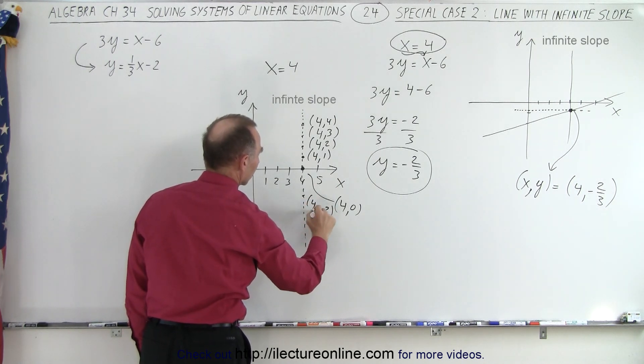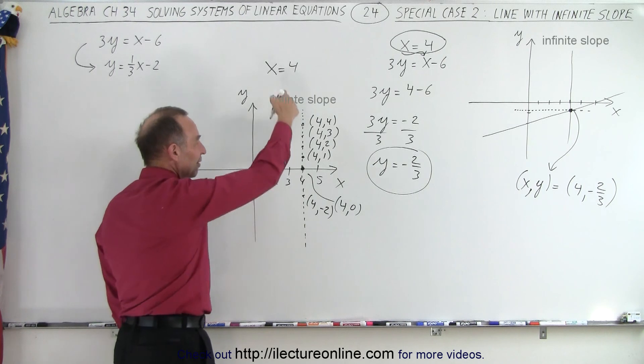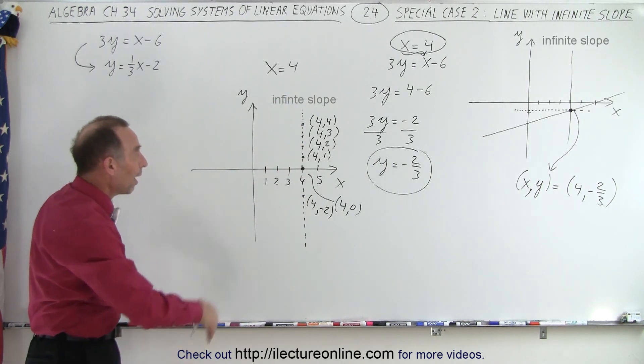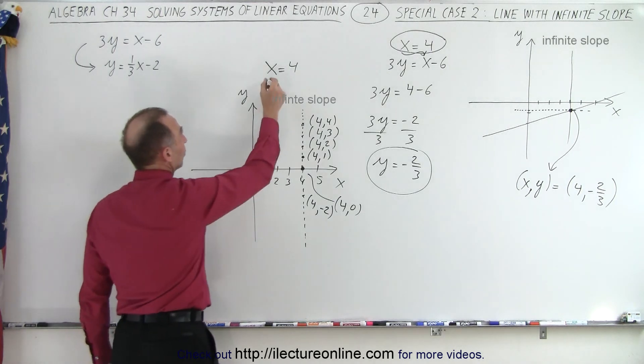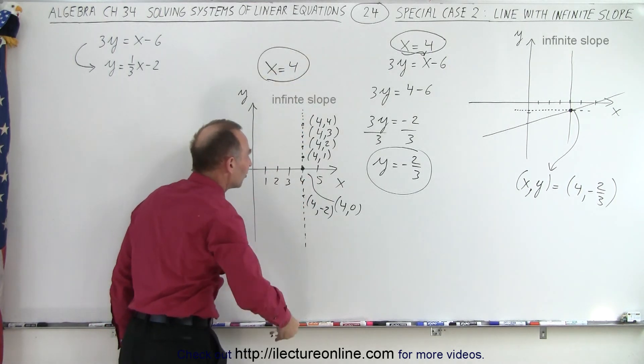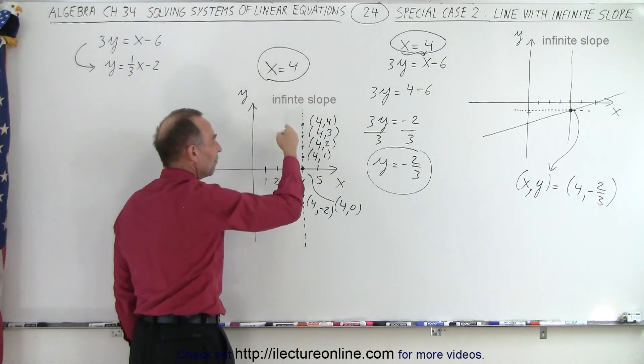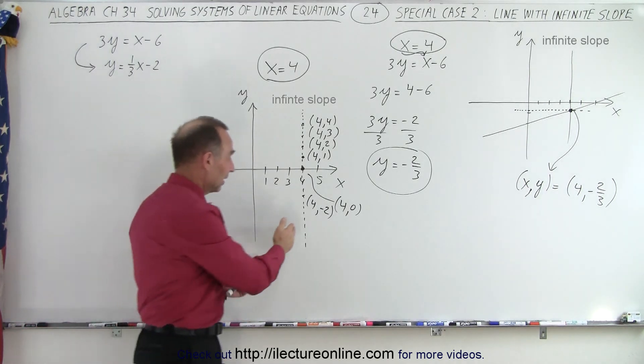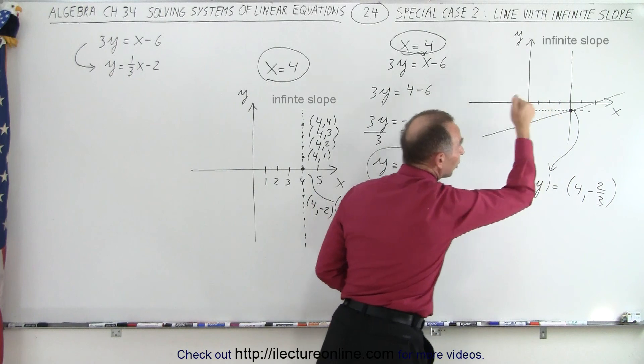It should be a comma. There we go. So you can see that every point on that line has the value x equals 4. The y value can be anything, and so that's what this represents. It represents a line where every point on the line has the value for x equals 4. And so that is the same line that we drew over there.